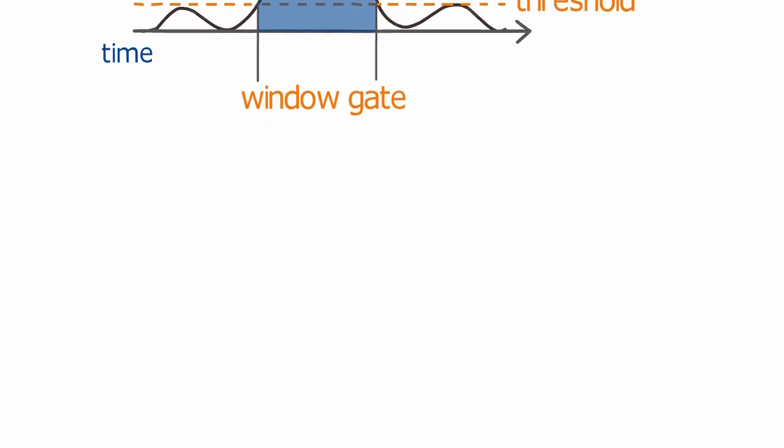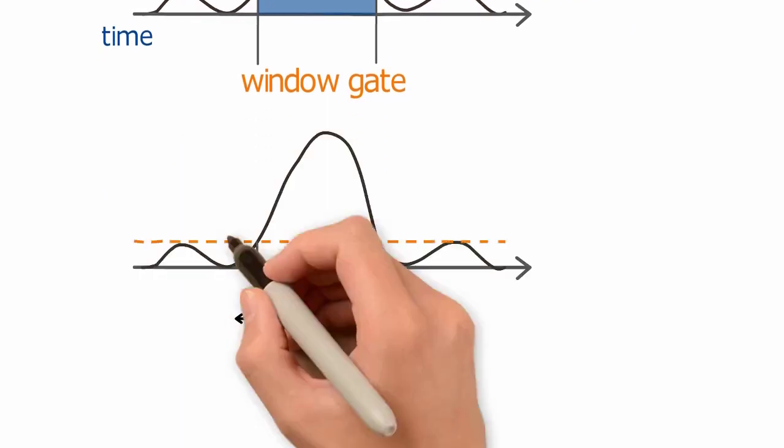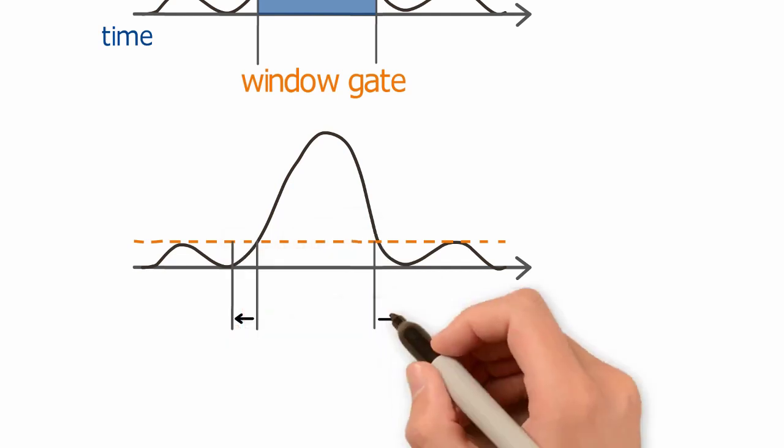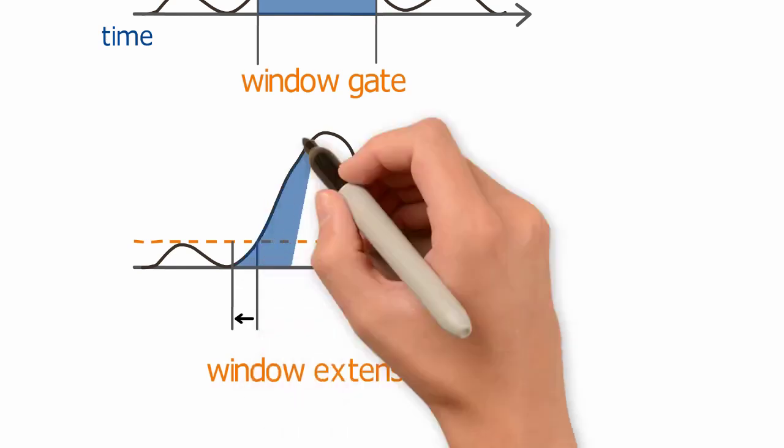To measure the complete area of the voltage pulse, the window gate can be extended by a set amount of time. This is the window extension. The window extension will be applied to the window gate any time a signal crosses threshold, which allows the system to accurately measure the total area of the voltage pulse.